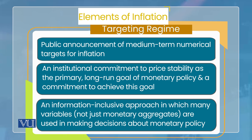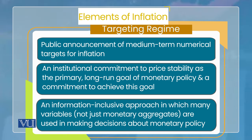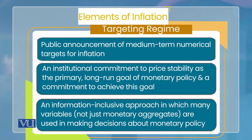دوسرا element: institutional commitment — policy کو ایک legal cover ملنا چاہیے کہ price stability اس کا primary goal ہو۔ پاکستان میں state bank کا act یہ legal cover دیتا ہے — وہ act جو national assembly کے floor پہ 2022 میں approve ہوا، جس میں کہا گیا کہ پاکستان میں monetary policy کا primary goal price stability ہے۔